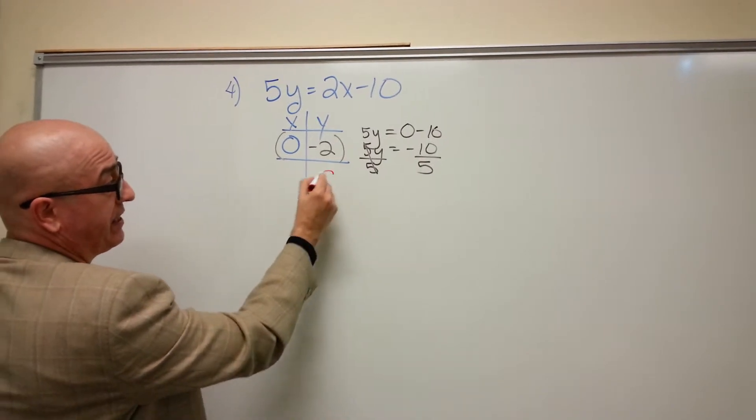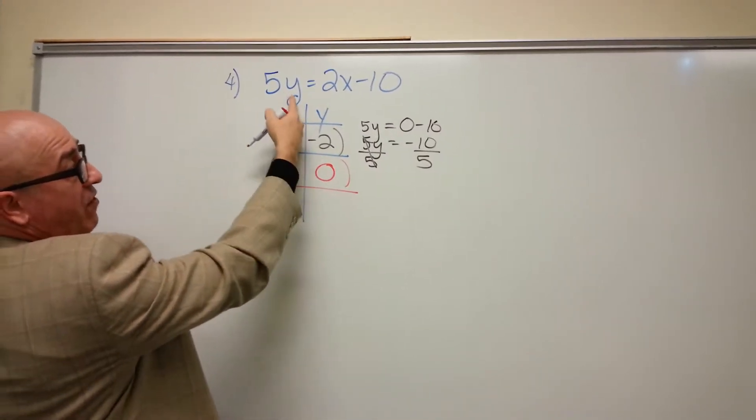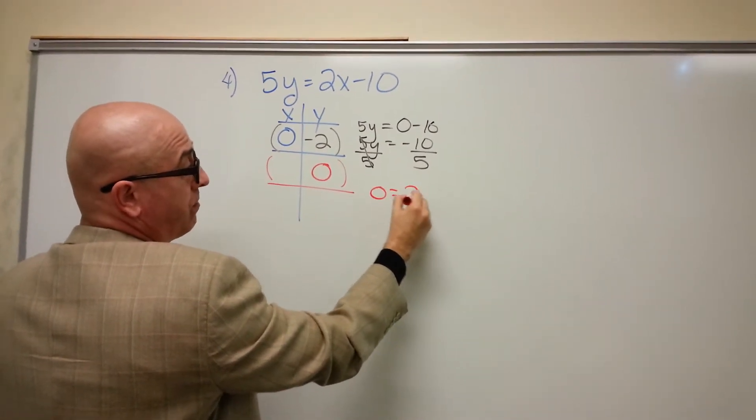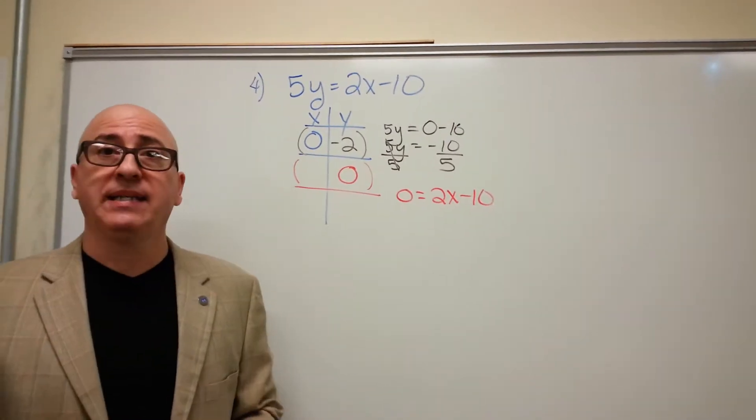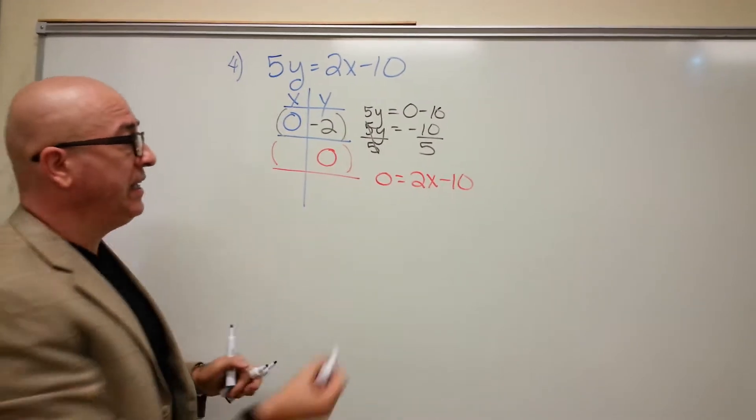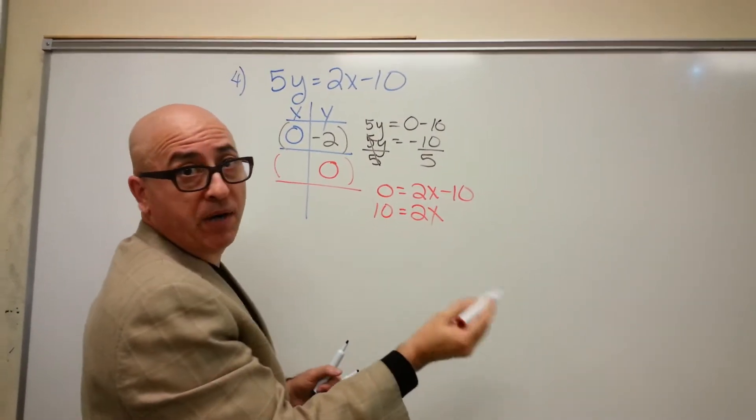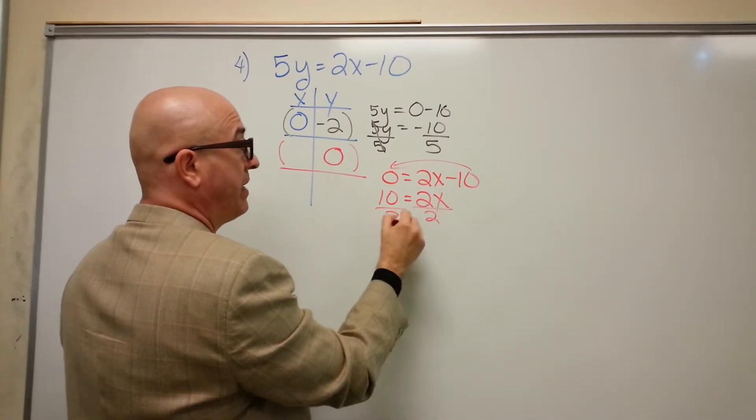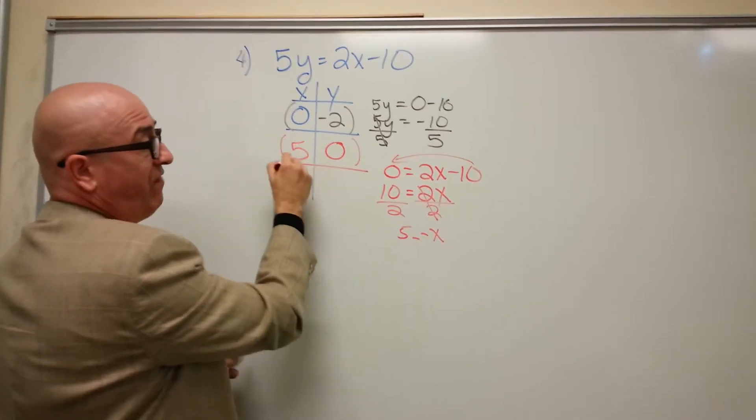Now let's plug a 0 in for y and figure out x. 5 times 0 is 0 equals 2x minus 10. So we need to move the 10 over. We're going to solve this for x. So add 10 to both sides, we'll just move it over and change the sign. And divide by 2. So x is 5.